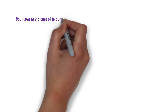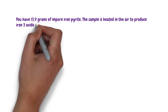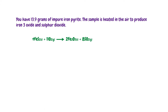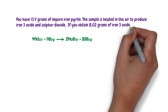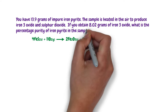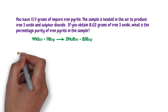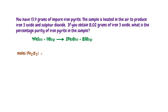The second question: You have 13.9 grams of impure iron pyrite. The sample is heated in the air to produce iron(III) oxide and sulfur dioxide. If you obtain 8.02 grams of iron(III) oxide, what is the percentage purity of iron pyrite in the sample? First, we need to find the mass of iron pyrite that reacted with oxygen to produce 8.02 grams of iron(III) oxide. To do this, we need to find the moles of iron(III) oxide. The moles of iron(III) oxide equals the mass given over the molar mass of iron(III) oxide.